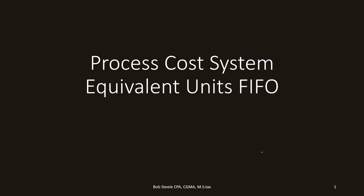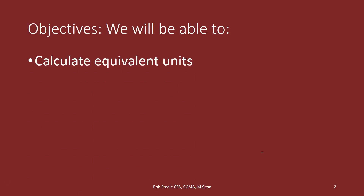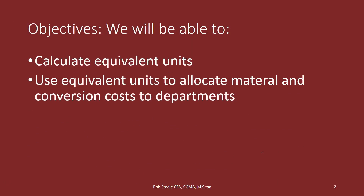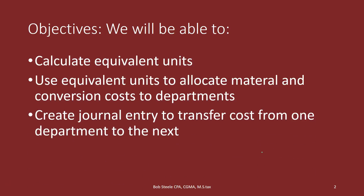In this lecture we're going to talk about a process cost system and equivalent units using the FIFO method. By the end of this, we will be able to calculate equivalent units, use equivalent units to allocate material and conversion costs to departments, and create journal entries to transfer costs from one department to the next.